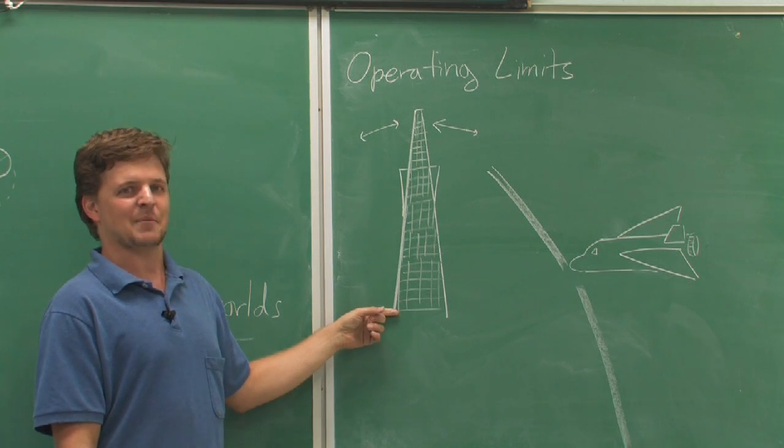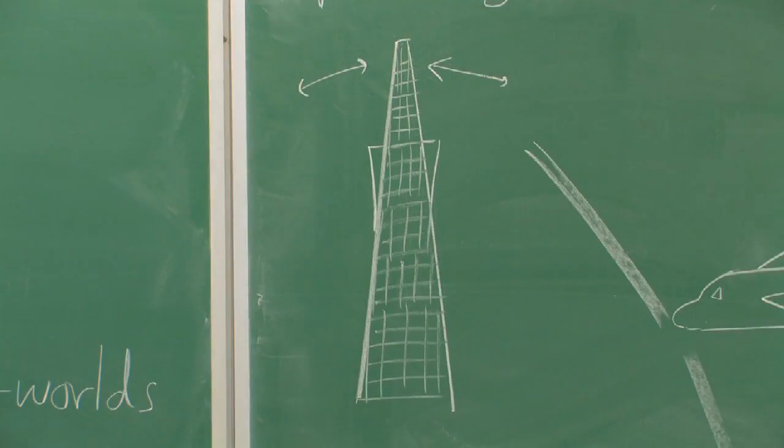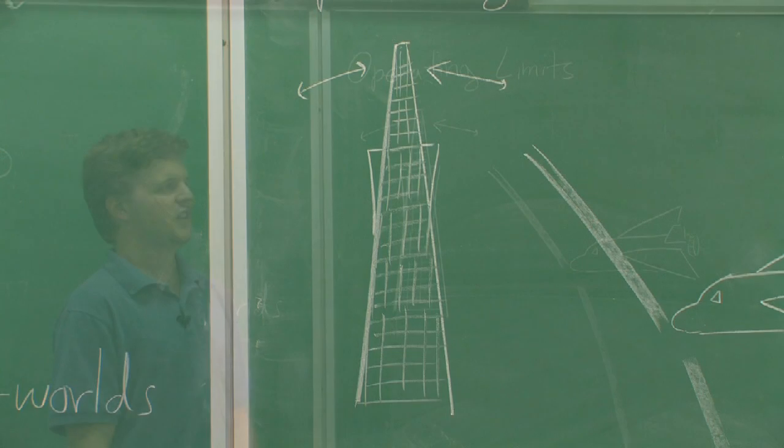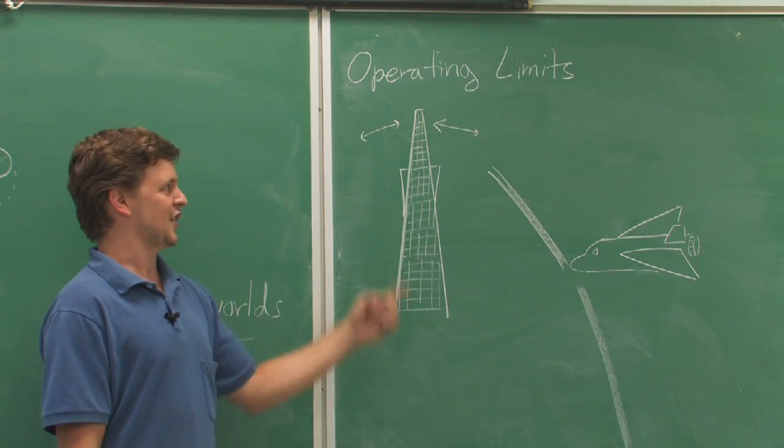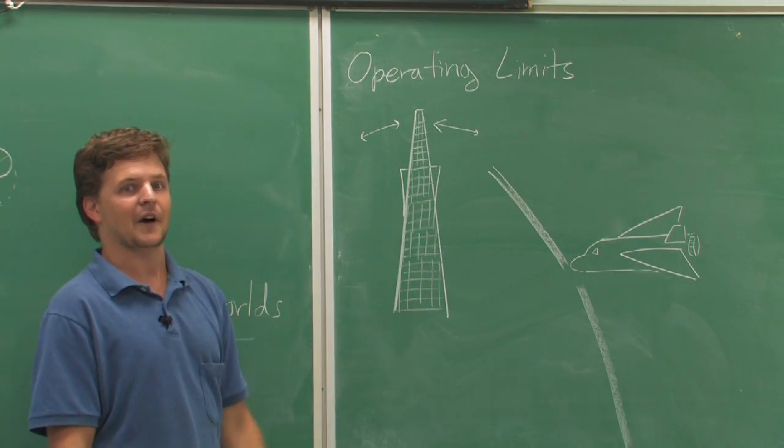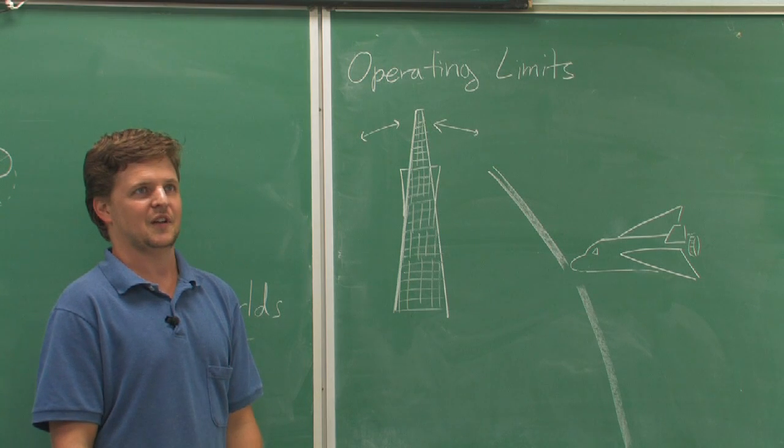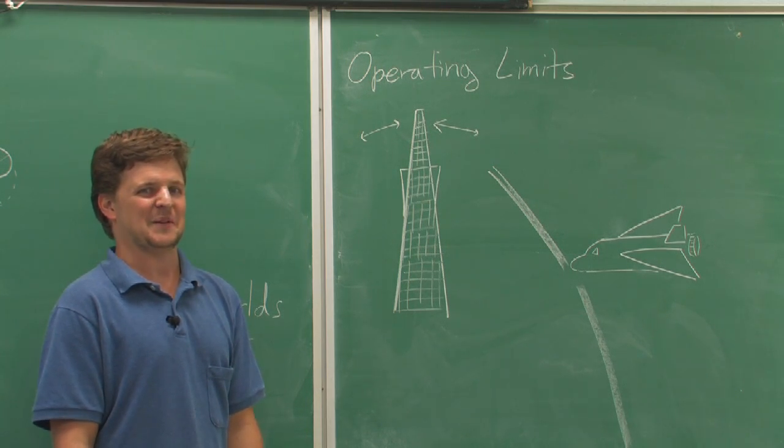For instance, a skyscraper needs to be designed so that it can withstand a certain amount of wind pressure at the top or a certain amount of earthquake pressure at the bottom.